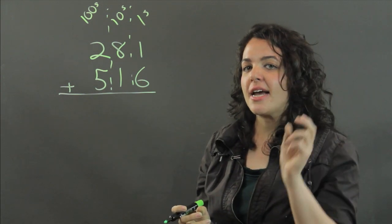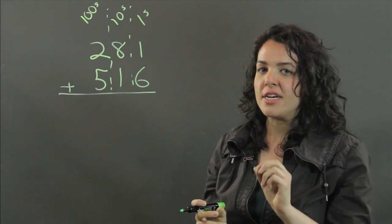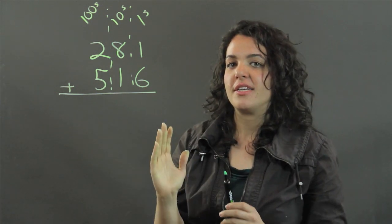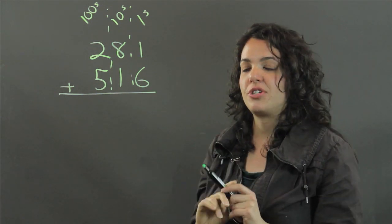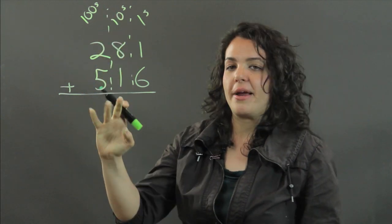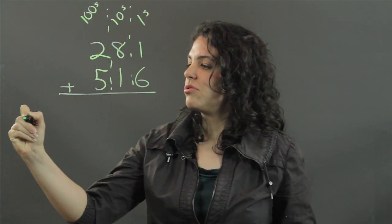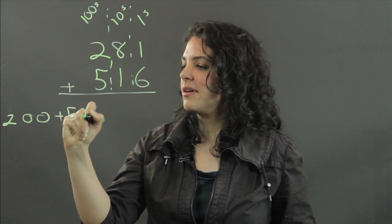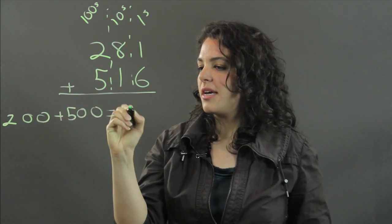Now if you're mentally adding, partial sums is a great way to add because we often think from left to right, and that's how you add in partial sums. You start from the left by adding the hundreds. So we do 200 plus 500 to get 700.